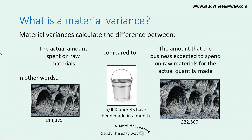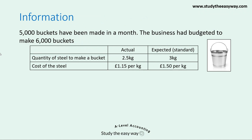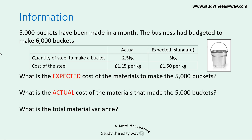Continuing with the same example: the business made 5,000 buckets in one month, but had budgeted to make 6,000 buckets — this is important to bear in mind. The quantity of steel to make a bucket was actually 2.5 kilograms per bucket, but had been expected to be 3 kilograms. The cost of the steel actually turned out to be £1.15 per kilogram, but had been expected to be £1.50 per kilogram. What is the expected cost of the materials to make the 5,000 buckets actually made, and what is the actual cost?